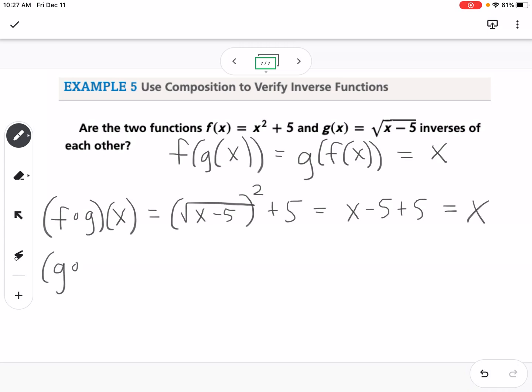Now I'm going to do g of f of x, so that would be taking x squared plus 5 and plugging it in for the x, so this would be x squared plus 5 minus 5. So the first thing I could do there is cancel the 5s. So then I'd be left with the square root of x squared, which we know is just x. So both of those work, so we would say yes, they are inverses. If you do f of g or g of f and they don't both equal x, then you're showing that they are not inverse functions.